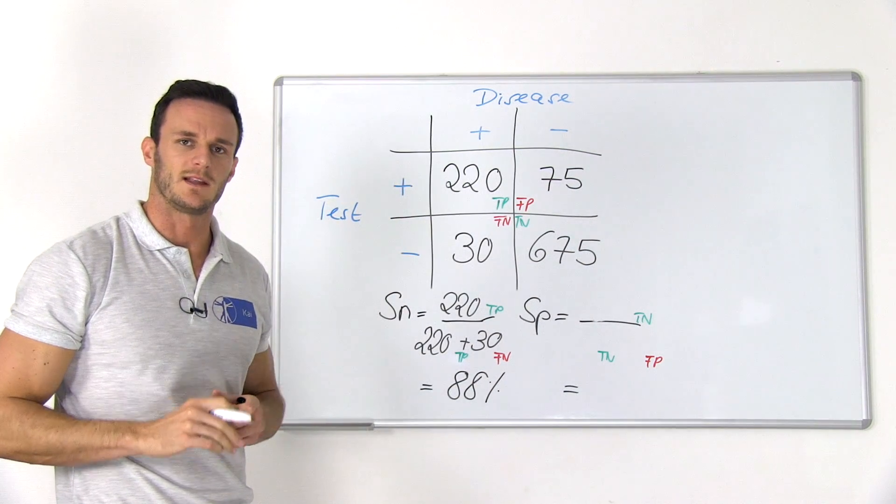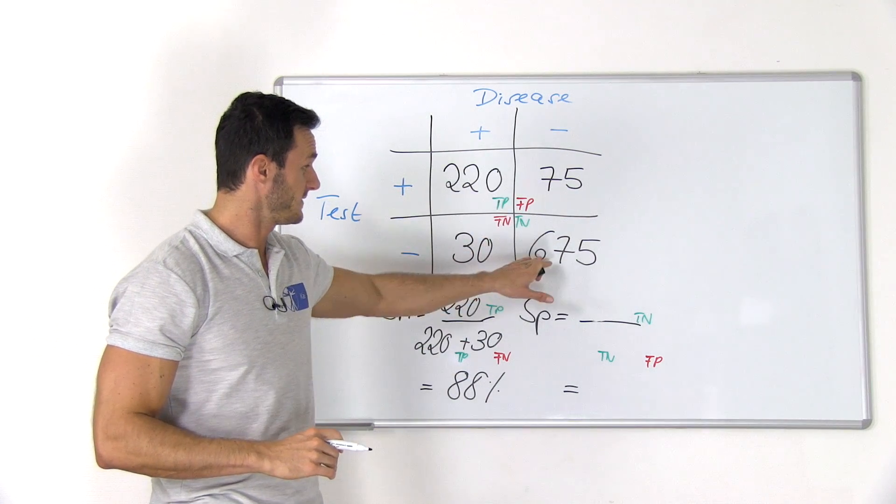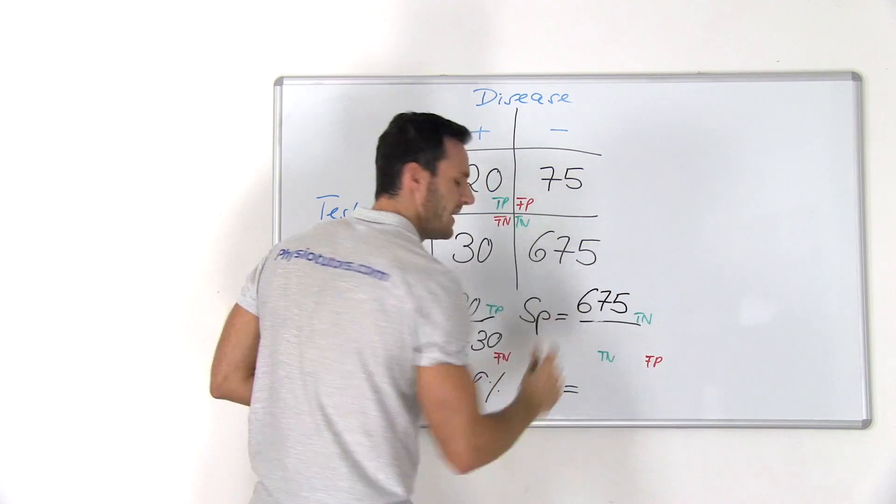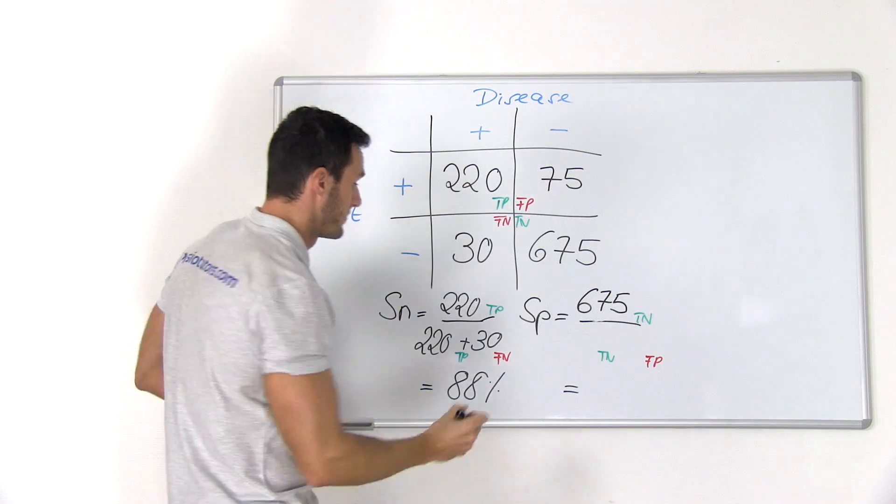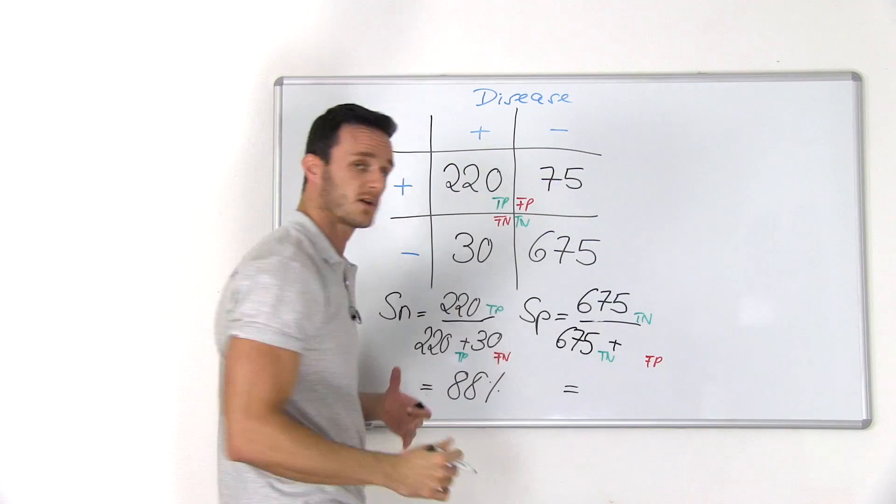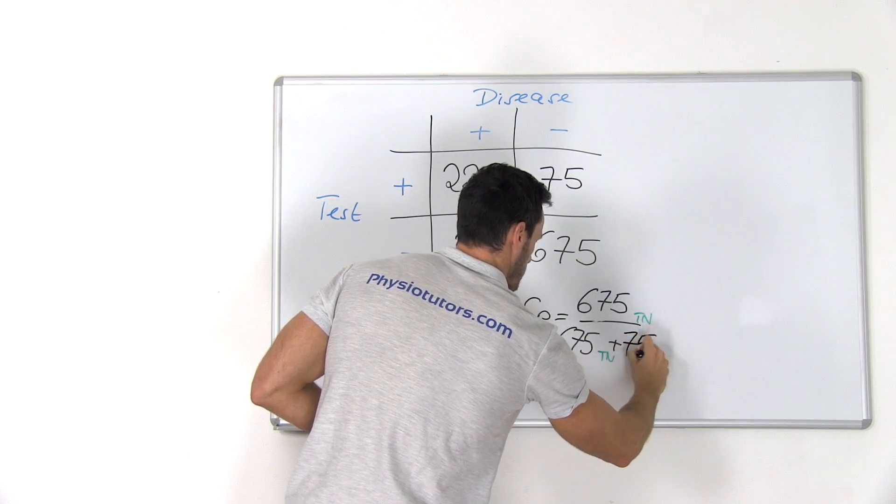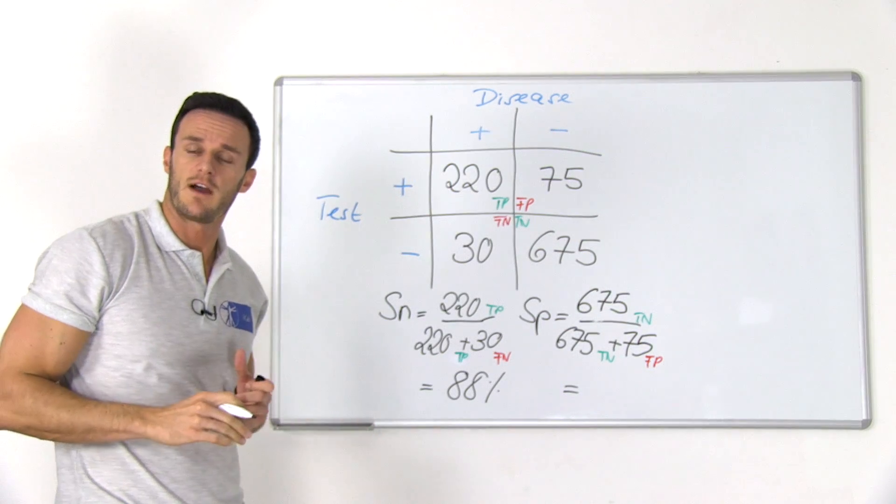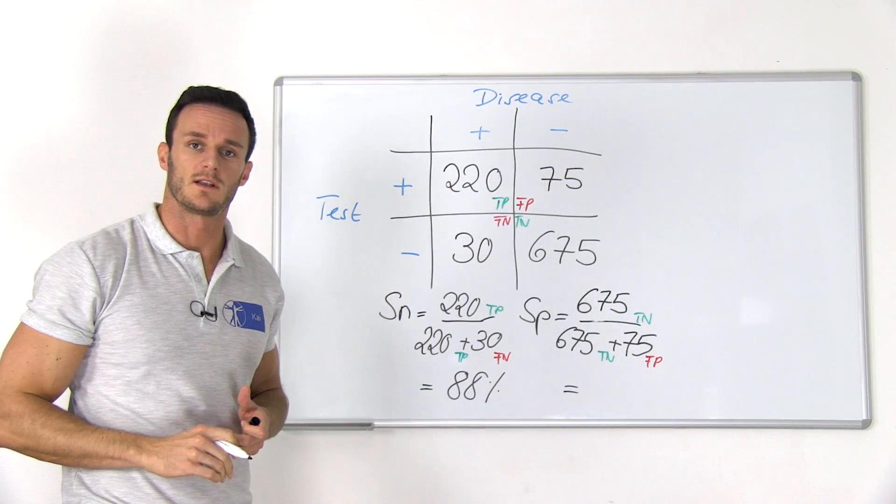In order to calculate the specificity, we said we have to take all true negatives, so 675, and divide them through all the values of the right column. So we divide 675 through 675 plus all false positives, which are 75. Then we end up at 675 through 750, which is about 0.9, so 90% specificity.